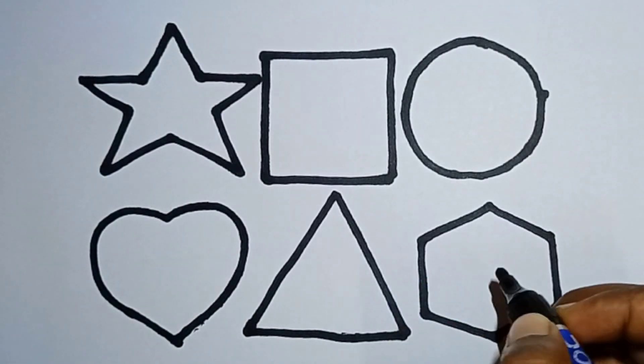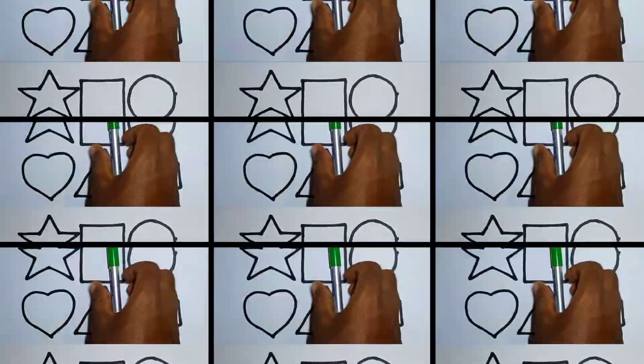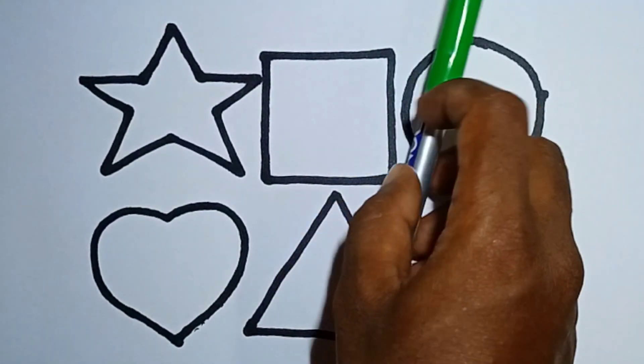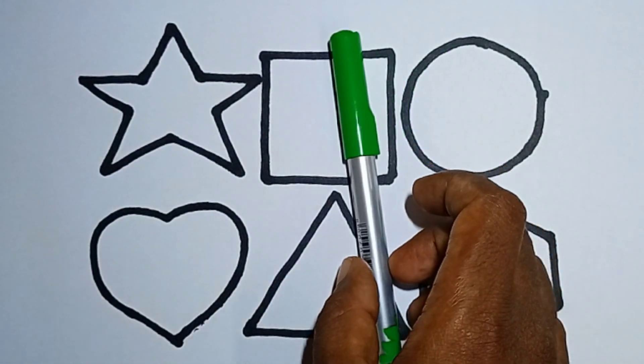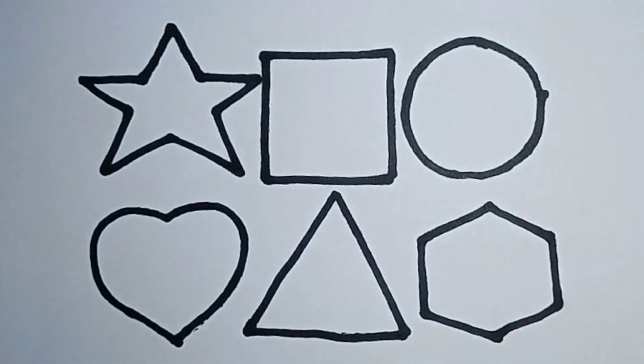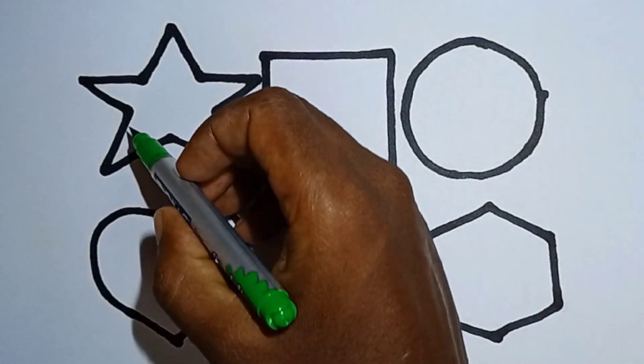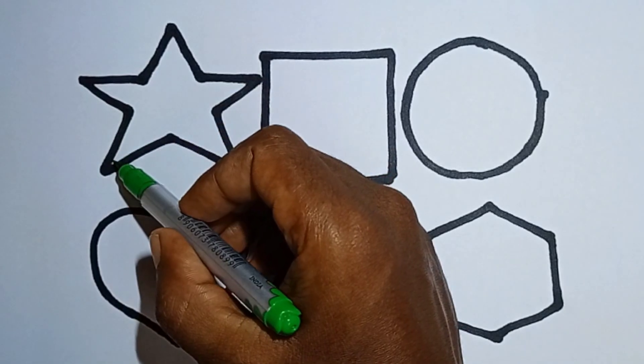And this is hexagon. This is hexagon. Next, coloring 2D shapes. This is light green color.